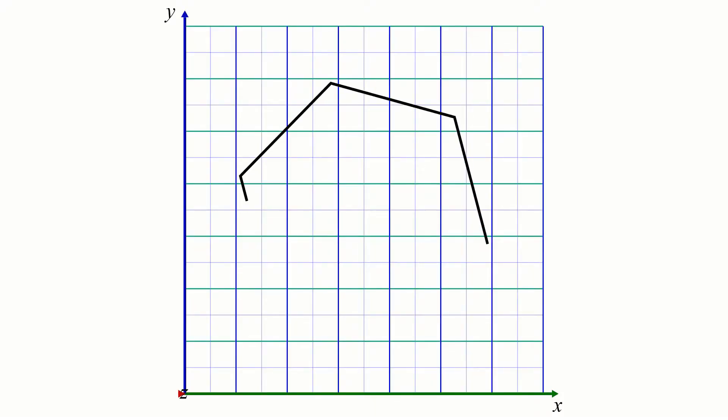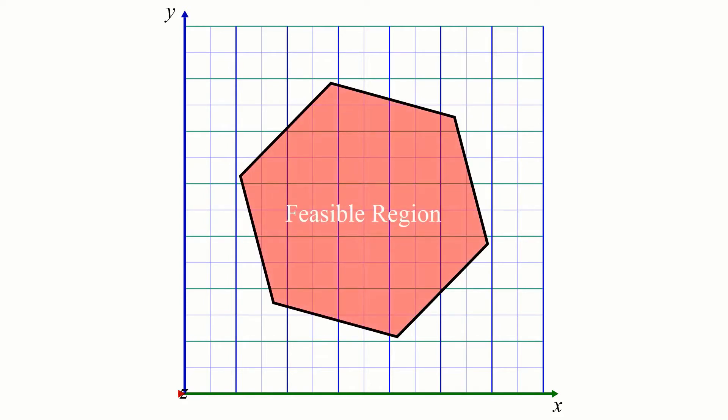Let's say we have a feasible region that looks like this. We're trying to find the point in this region that maximizes or minimizes some objective function.